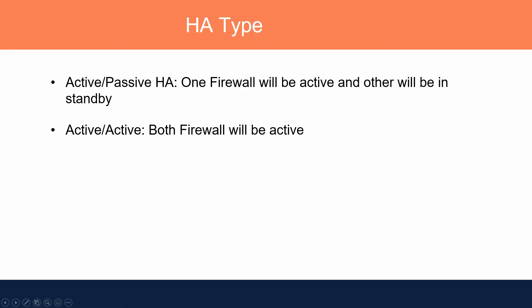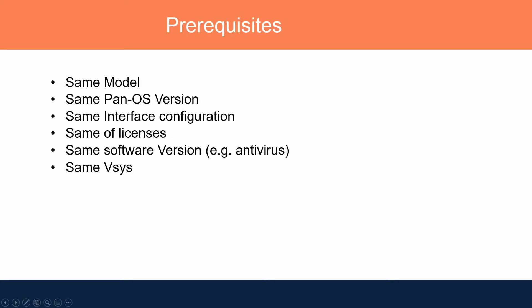Palo Alto firewalls support two HA modes: active-passive and active-active. In active-passive mode, one firewall is active and the other is on standby. If the active firewall fails, the standby takes over and becomes active. In active-active mode, both firewalls are processing packets simultaneously. If either one fails, the other continues its function.